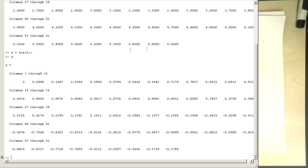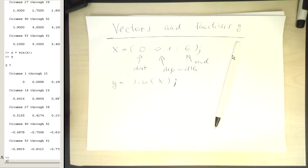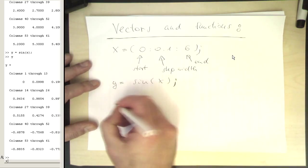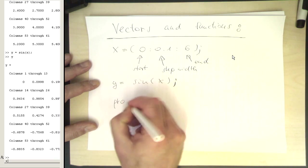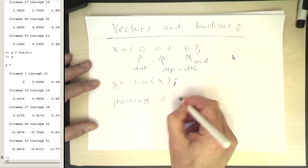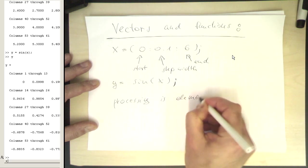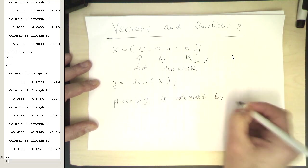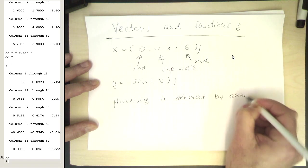So we see that MATLAB has basically processed all these values here, one by one, and generated new values out here. This means MATLAB is processing the vector element by element - processing this element by element by element.